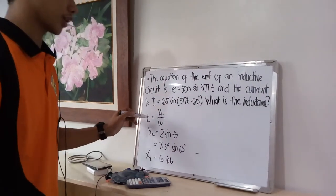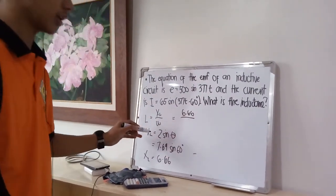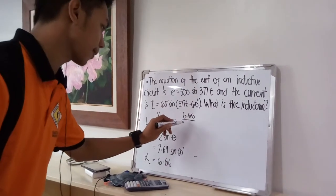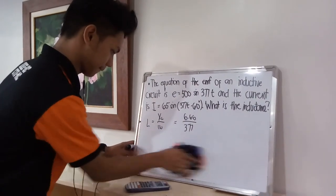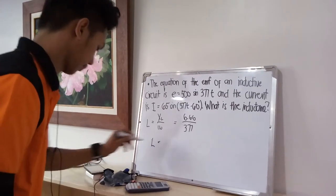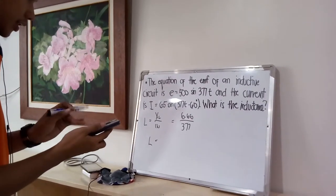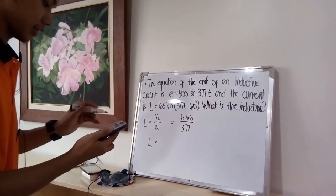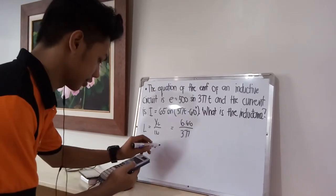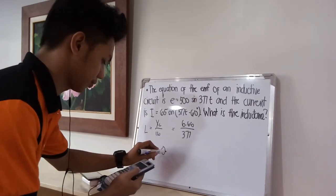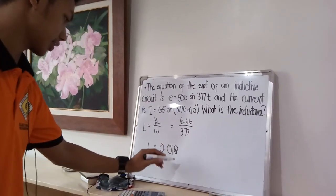The inductive reactance is 6.66. Now we can solve for inductance: L equals X sub L over omega, which is 6.66 divided by 377, equals 0.018 Henry.